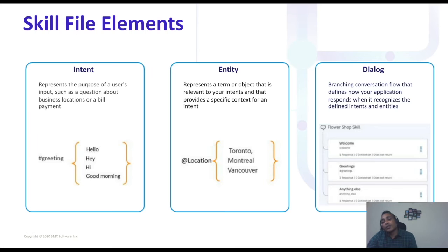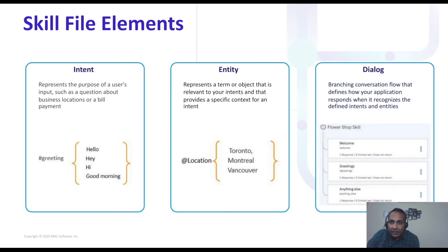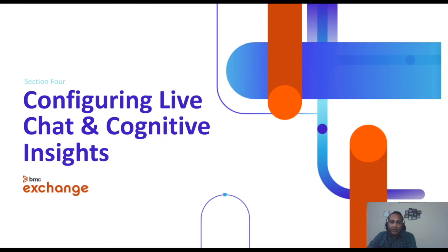An entity is what the system responds back to the user. When you say 'I want to give bonus to my employee' or 'I have an issue with my computer,' the entity asks you questions — for spot bonus it might ask who you want to give it to and whether it's cash or a reward. A dialogue is a combination of intents and entities; depending on your responses, the dialogue jumps to various nodes where responses are built. For services in Digital Workplace, intents and entities are created automatically when you publish those services.